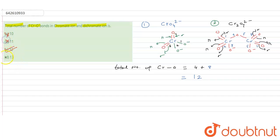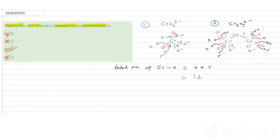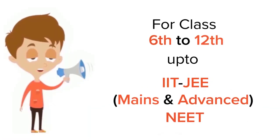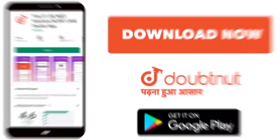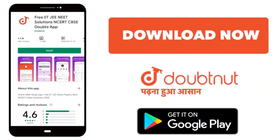Options A, B, and D are incorrect; option C is the correct answer. Hope this answered your question. DoubtNet is trusted by more than 5 crore students for class 6 to 12, IIT JEE, and NEET level preparation — download DoubtNet today.